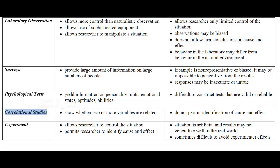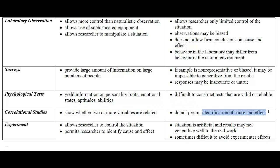Correlational studies do show whether two or more variables are related, but they do not permit identification of cause and effect. The experiment, which we've already gone over in another video, allows the researcher to control the situation and permits the researcher to identify cause and effect. The experiment is the only method that allows you to determine cause and effect.